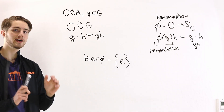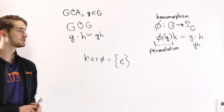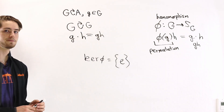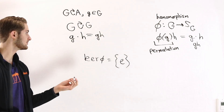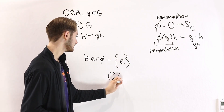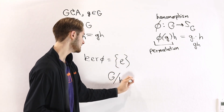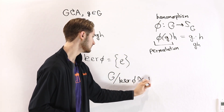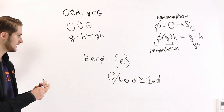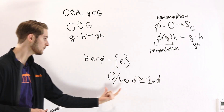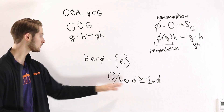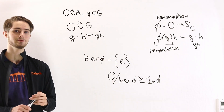Now we're going to apply the first isomorphism theorem to this homomorphism φ. The first isomorphism theorem says that G mod the kernel of φ is isomorphic to the image of φ. Let's take a look at what G mod the kernel of φ is — remember the kernel is just the identity element.